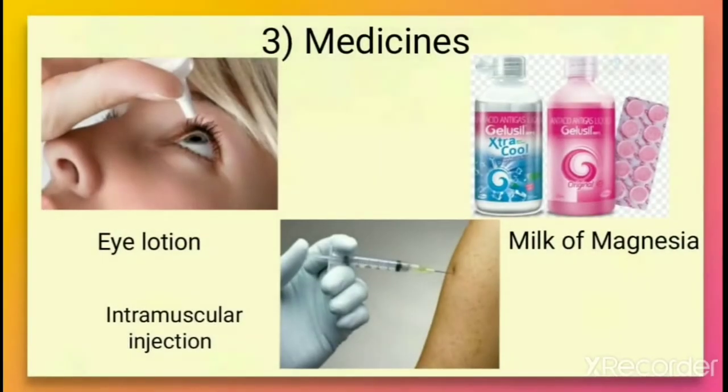Most medicines are colloidal in nature. For example, eye lotions, intramuscular injections, and milk of magnesia — which is actually an emulsion used for stomach disorders.